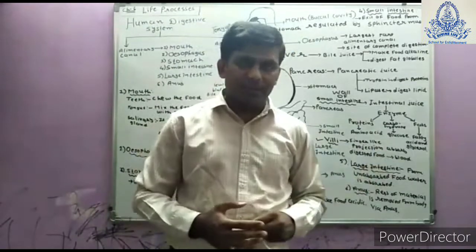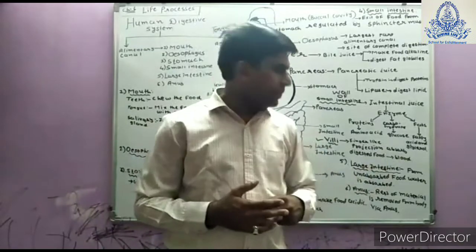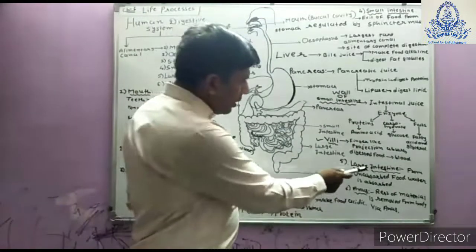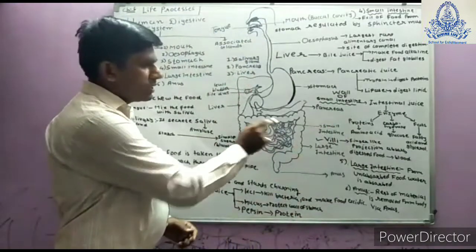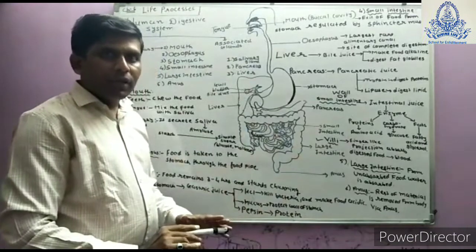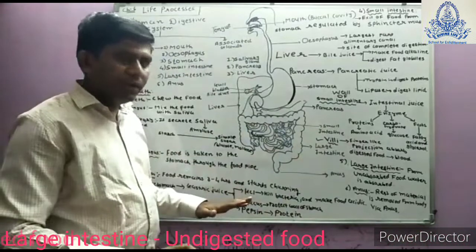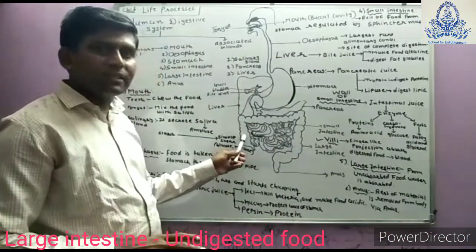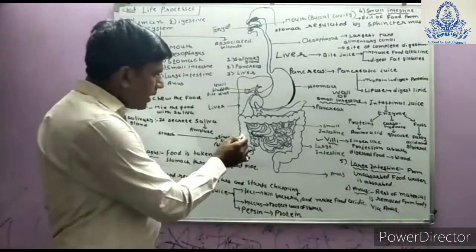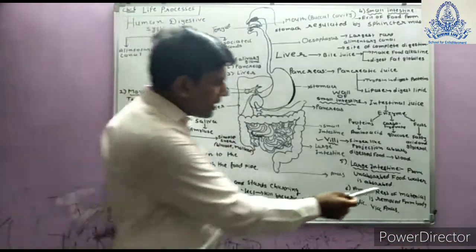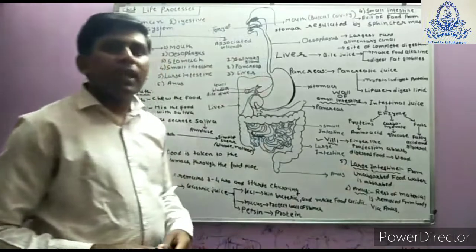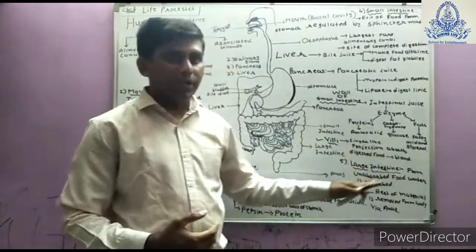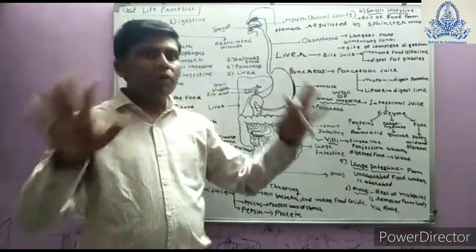After that, the undigested food enters the large intestine. In the small intestine digestion is completed, so no further digestion happens in the large intestine. In the large intestine, water is absorbed from the undigested food, and the remaining waste material is removed from the body through the anus. This is the overview of the human digestive system.